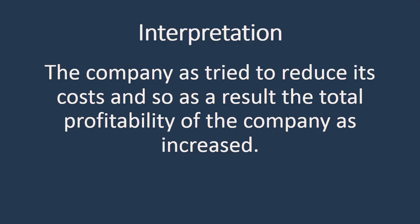When we look at the interpretation part, what do we write? The company has tried to reduce its cost, and as a result the total profitability of the company has increased. Because the cost has gone down, expenses have reduced, and the overall operating income has gone up, the profitability of the company has gone up. This is the interpretation which we have inferred from the comparative financial statement.